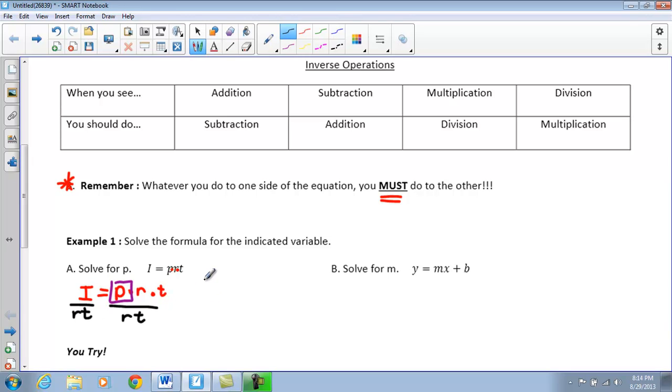Now, when I rewrite here, I have I equals, or I over RT equals P. As long as P is all by itself on one side of the equal sign, then we solve for that variable. So, this is what your final answer should look like.